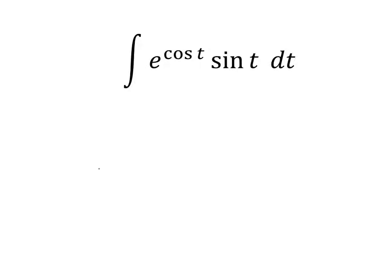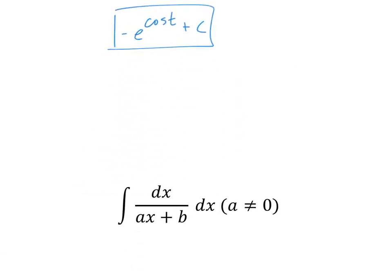Okay, I'm going to give you just the answer. Negative e to the cosine t plus c. Good? How do you get the negative? Oh, derivative of cosine is negative sine. Okay, next one.